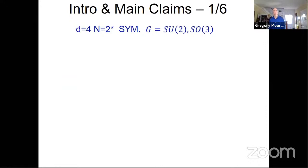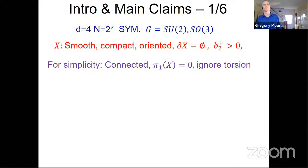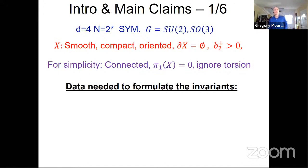We're going to talk about a four-dimensional N equals two star super-Yang-Mills theory with gauge group SU(2) or SO(3). X will denote a smooth, compact, oriented four-manifold without boundary with positive B2+. For simplicity, we'll take X to be connected, simply connected, and we'll ignore torsion in the cohomology.